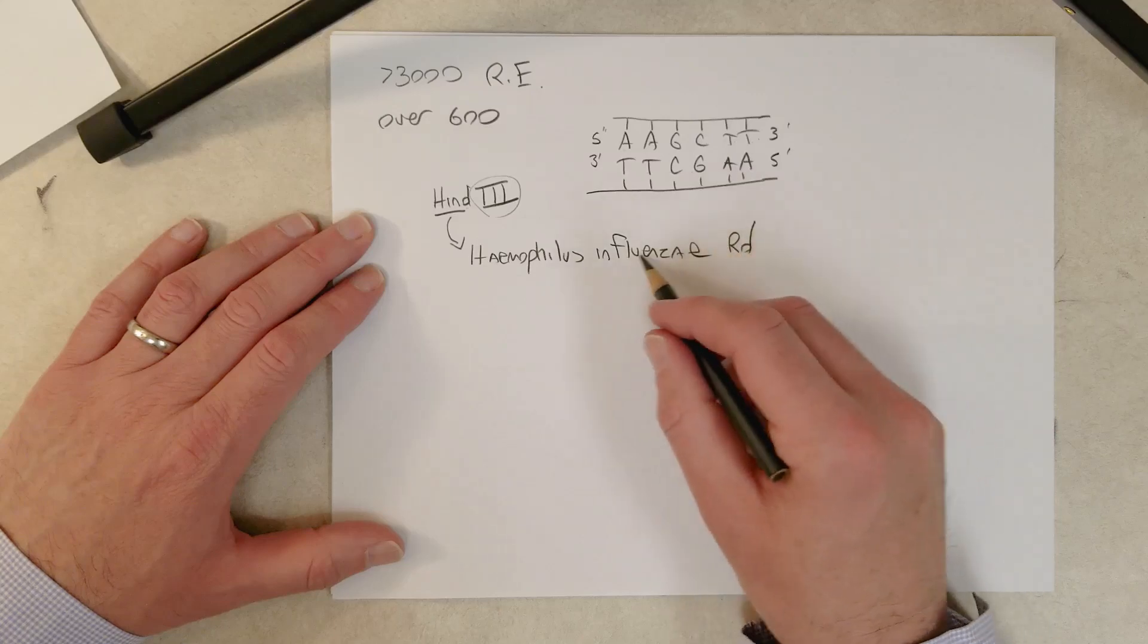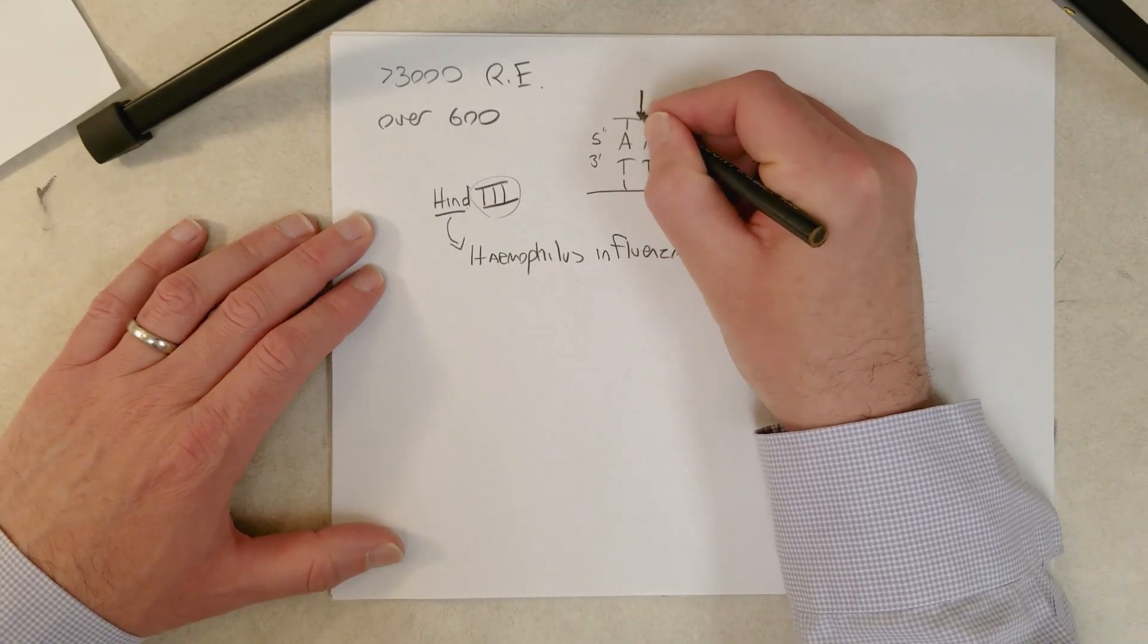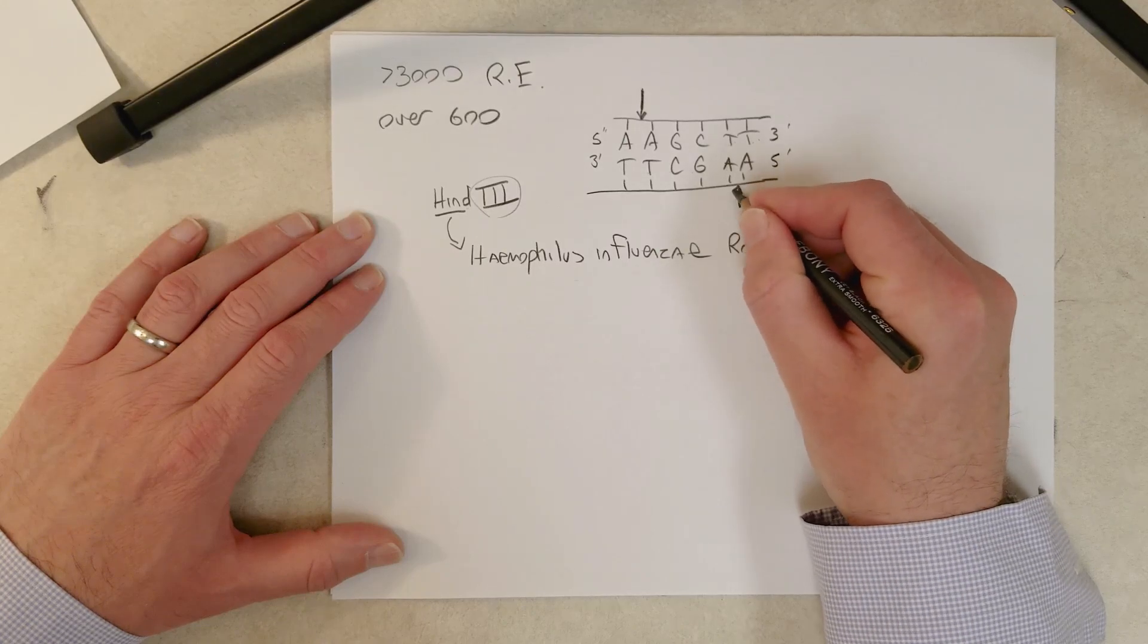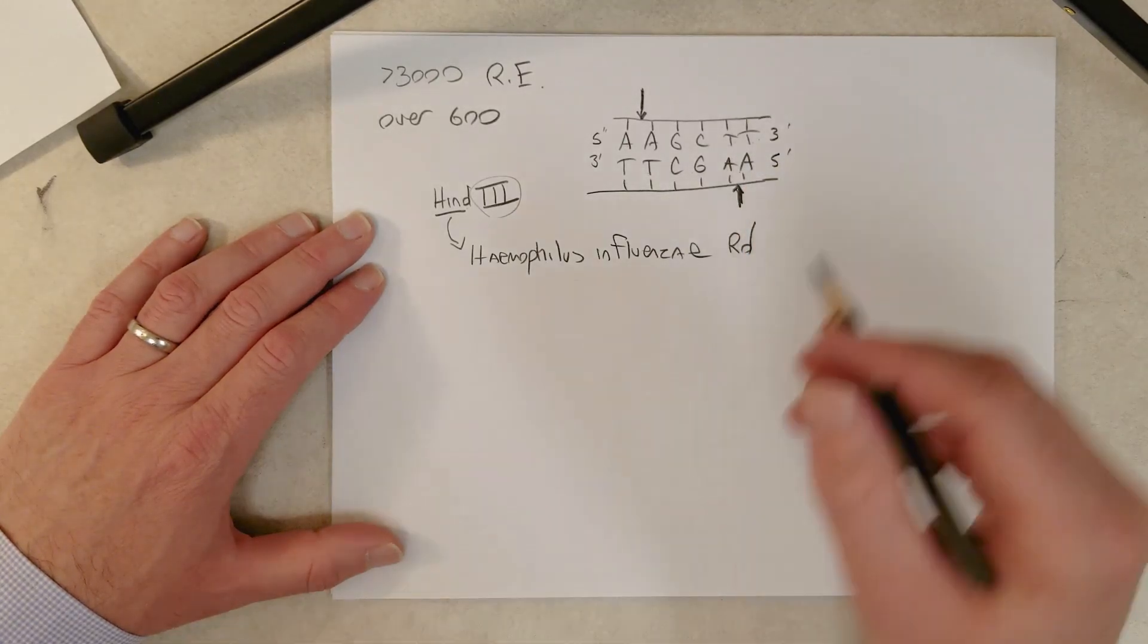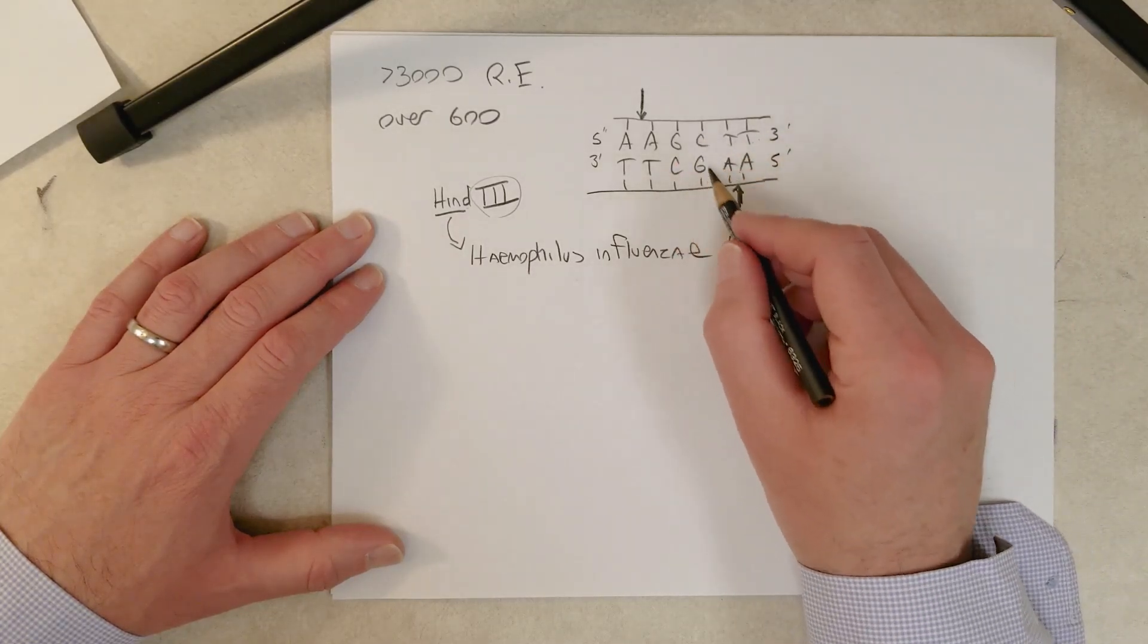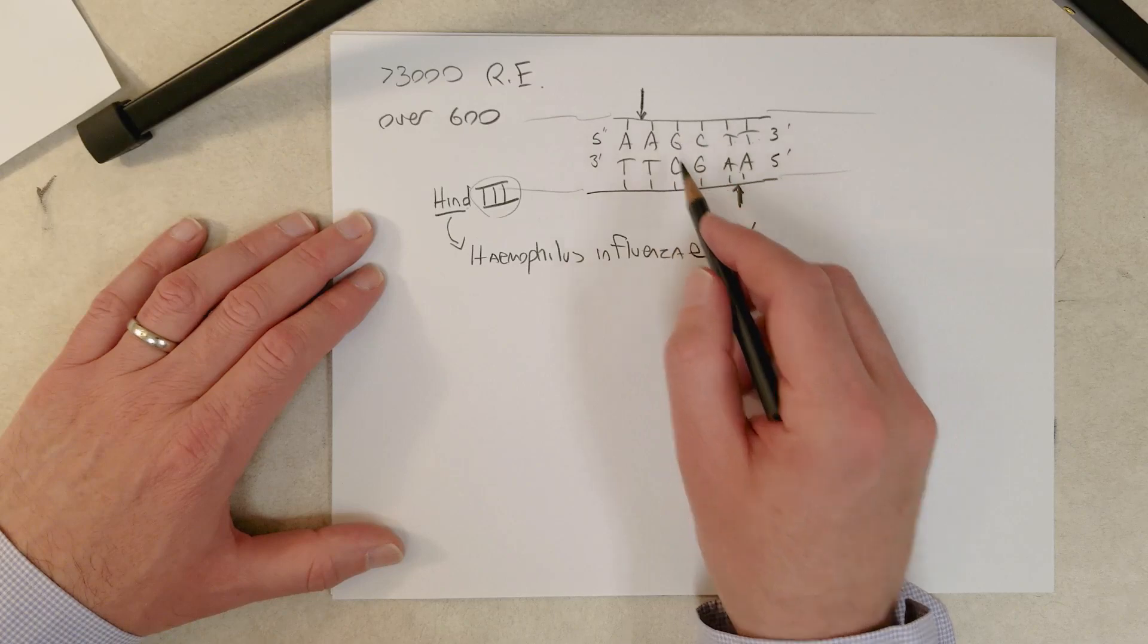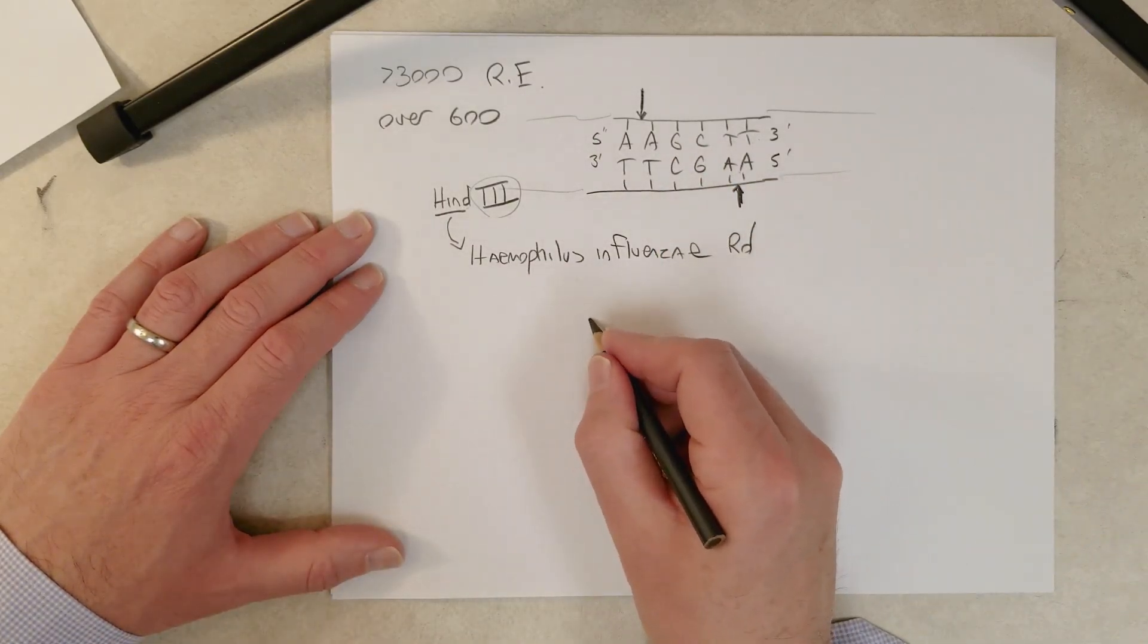So how would this enzyme cut this sequence? Well, it would cut right here. This one cuts the phosphodiester backbone between these two A's here and the phosphodiester backbone between those two A's there. And what happens is it creates two new DNA ends in this DNA molecule.